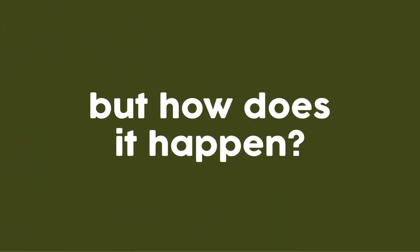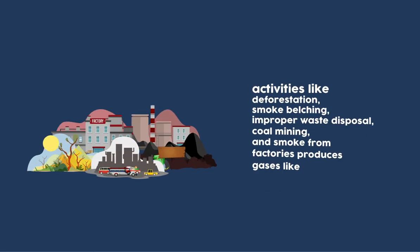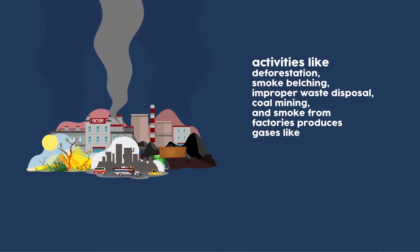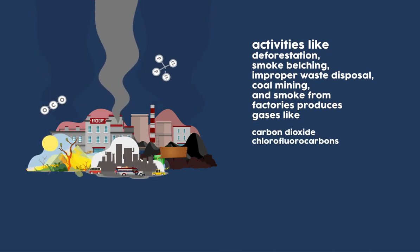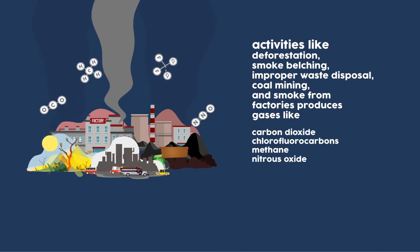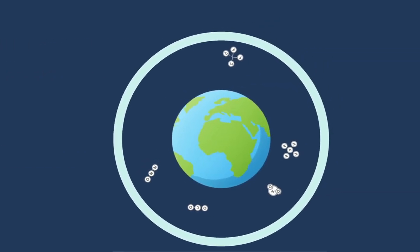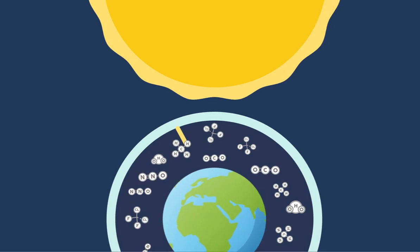But how does it really happen? Activities like deforestation, smoke belching, improper waste disposal, coal mining, and smoke from factories produces gases like carbon dioxide, CFCs, methane, nitrous oxide, and water vapor, which can be harmful when it accumulates inside the Earth's atmosphere.